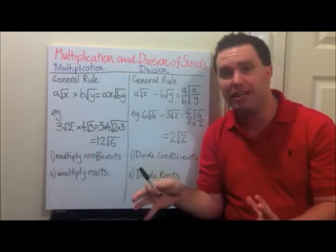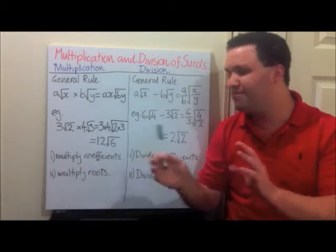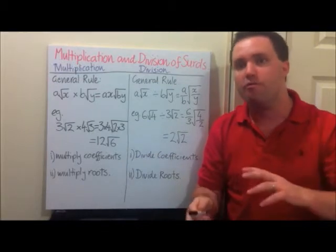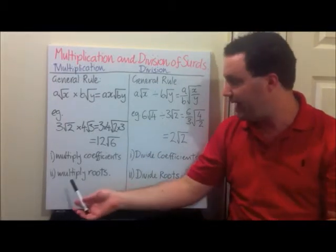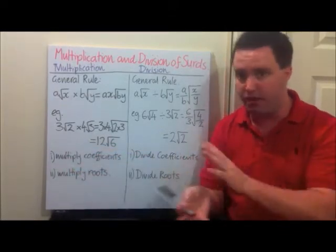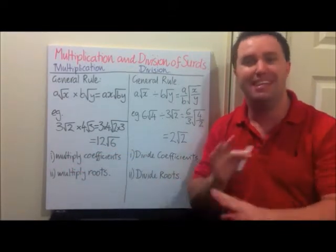The steps for multiplying surds together: firstly, we multiply the coefficients, remembering that coefficients are the numbers at the front. Then we multiply the roots, the numbers that are inside the square root function.